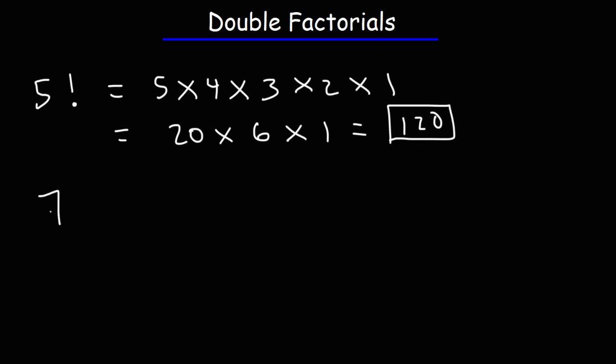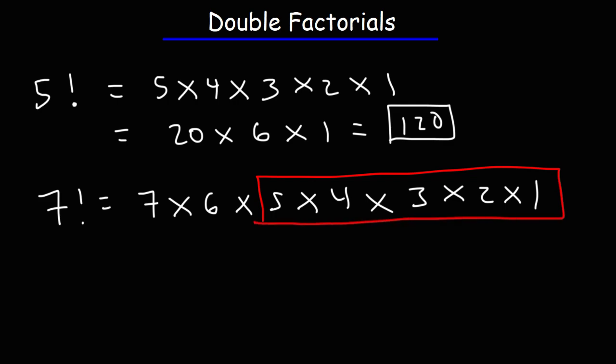For instance, 7 factorial will be 7 times 6 times 5 times 4 times 3 times 2 times 1. Now, we already know this part. That's equal to 5 factorial, so that's 7 times 6 times 5 factorial.